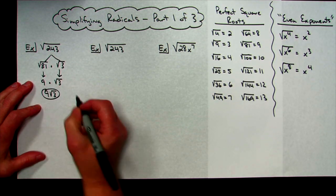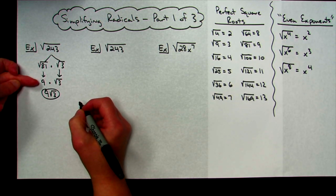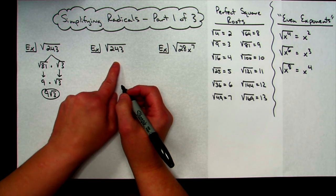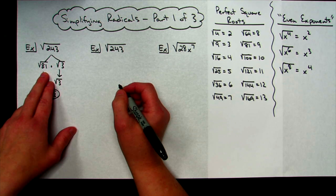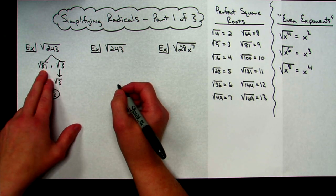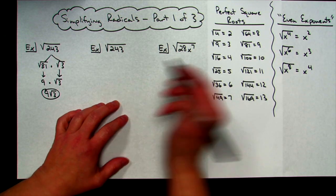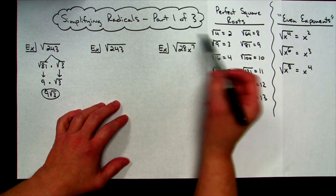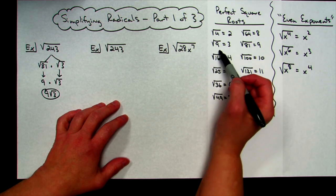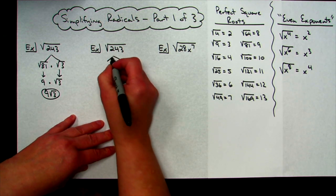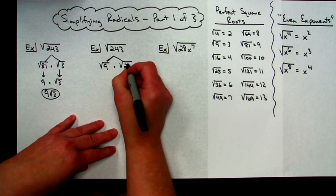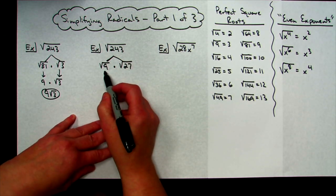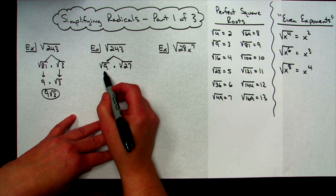So 9 radical 3 is my answer — the factor tree was just two short lines. Now I want to show what happens if you didn't pick the biggest perfect square root. Maybe you went 243 divided by 4 — that doesn't work — then 243 divided by 9, which does: 9 times 27 is 243. If you chose that one, you can still do the problem, it's just a longer process.